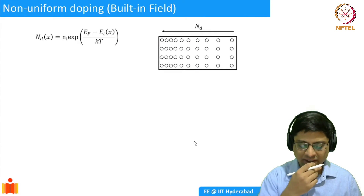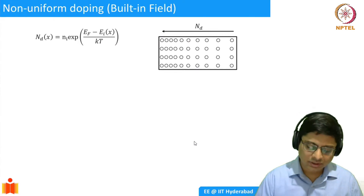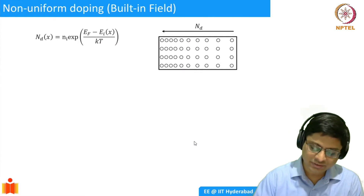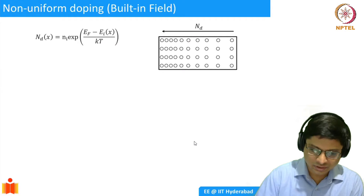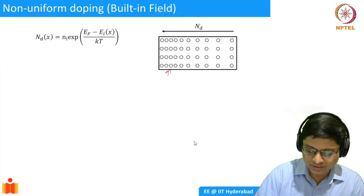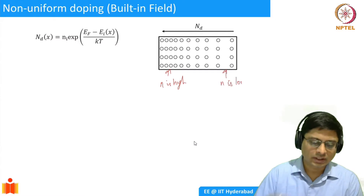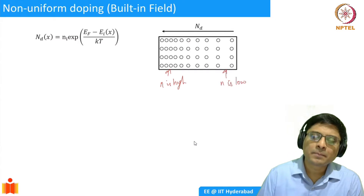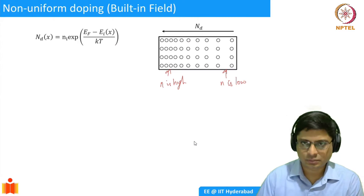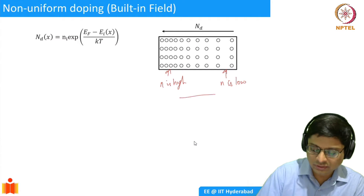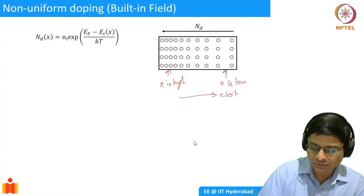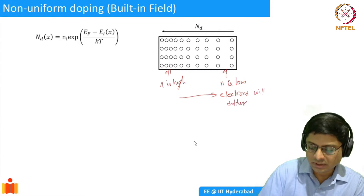Consider the situation where you have a semiconductor doped with donors, so you have some electrons. N is high in one region and low in another. What would happen? It would essentially lead to diffusion of carriers — from high concentration, electrons will diffuse in the positive X direction.